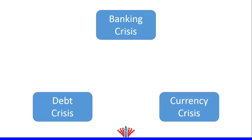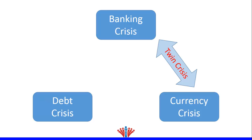Any two types of financial crises could happen simultaneously, which is called a twin crisis. For example, banking and currency crises could happen simultaneously, where a large decline in currency value could result in large bank losses and bank runs. Currency and debt crises could also happen simultaneously.